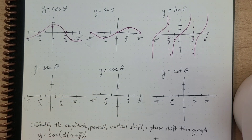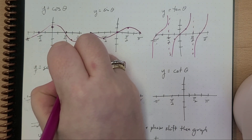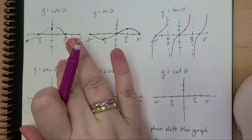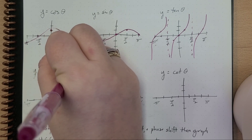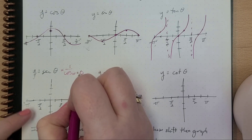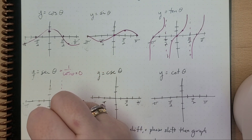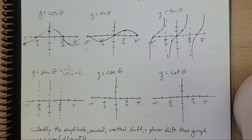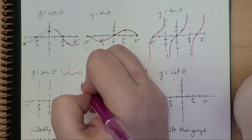So when we're talking about secant, the period of secant is 2π over b. We can think of secant as 1 over cosine θ. So when is cosine of θ equal to 0? Well, cosine of θ is equal to 0 at π/2 and negative π/2. And if I had all the way out here, 3π/2, then I would have one there too.